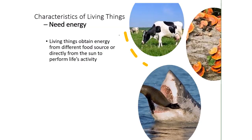Another characteristic is that all living things need energy. Some organisms are carnivorous and eat other animals; some are herbivores and eat plants; fungi are decomposers that grow on decaying matter to get energy. It doesn't matter how you obtain the energy — the fact that you need a food source to generate energy is a characteristic of all living things.